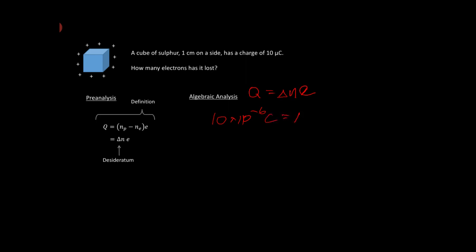And delta n is what we want. And e we said was 1.609 times 10 to the minus 19 coulombs. Okay, that means we want to figure out what the n is.